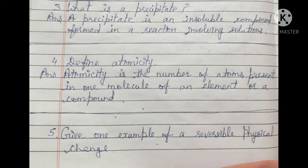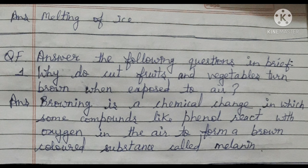Question 5: Give one example of a reversible physical change. The answer is melting of ice. Ice melts to form water, and when this water is placed in the refrigerator, it again freezes to form ice.